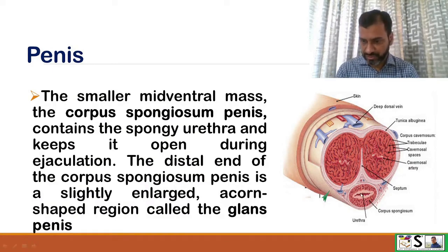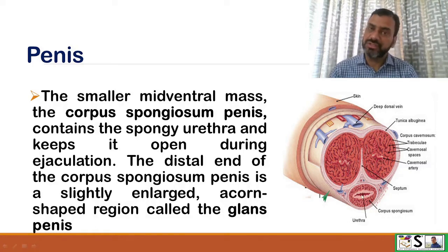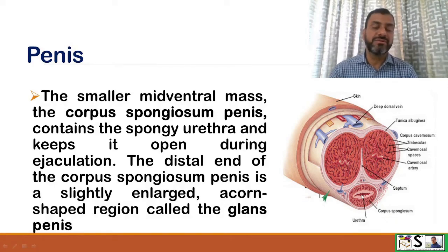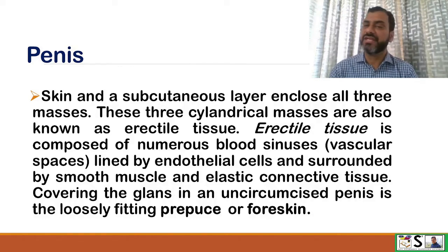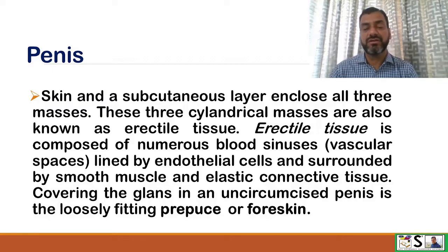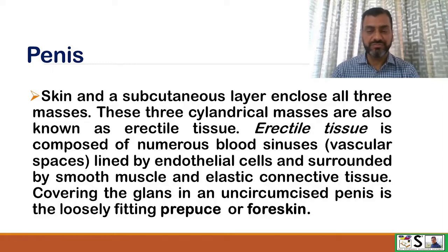The corpus spongiosum contains the spongy urethra and keeps it open during ejaculation. The distal end of the corpus spongiosum is slightly enlarged, acorn-shaped, and is called the glans penis. Skin and subcutaneous layers enclose all three masses. These three cylindrical masses are also known as erectile tissue, composed of numerous blood sinuses lined by endothelial cells and surrounded by smooth muscle and elastic connective tissue. In uncircumcised males, covering the glans is the loosely fitted prepuce, or foreskin.